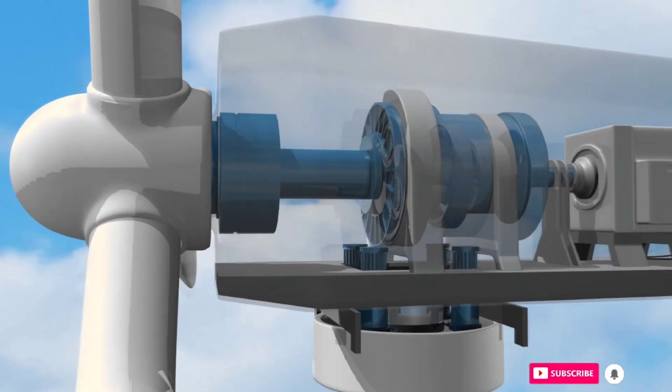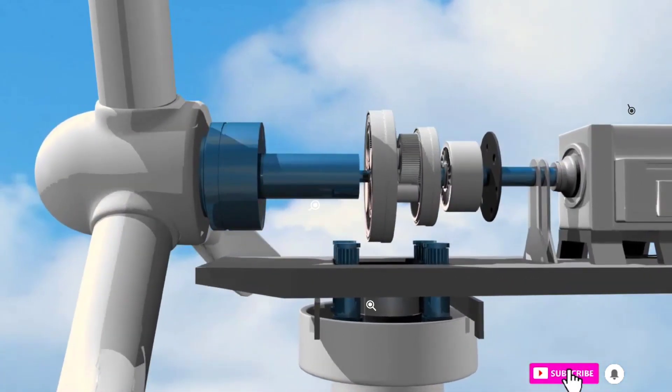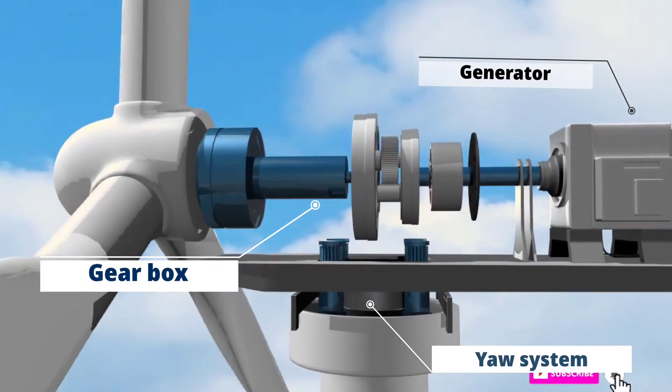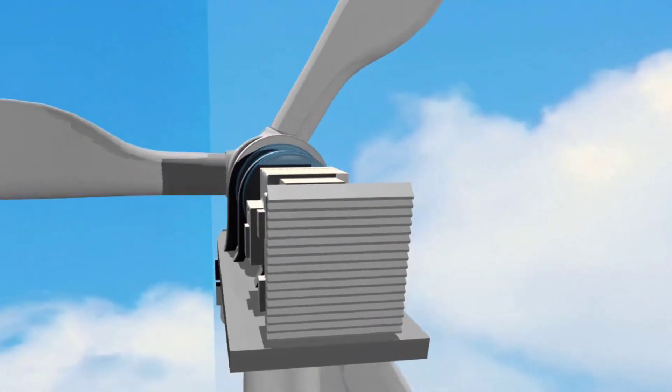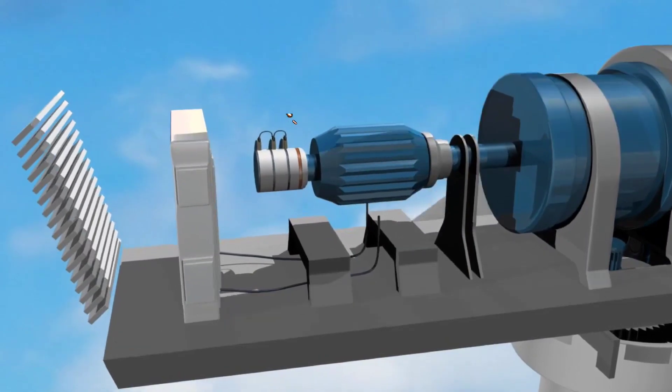The rotor connects to the generator either directly if it's a direct drive turbine or through a shaft and a series of gears, a gearbox that speeds up the rotation and allows for a physically smaller generator. This translation of aerodynamic force to rotation of a generator creates electricity.